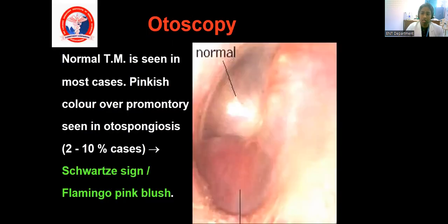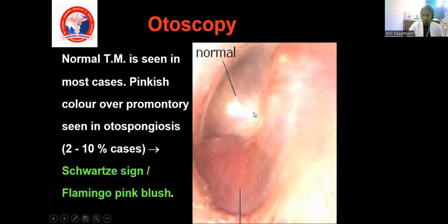On examination, in otosclerosis the external ear canal, tympanic membrane, and middle ear are usually normal. But in some cases of active otosclerosis where there is hypervascularity — especially when the lesion is over the cochlear type near the round window or promontory — the lesion will be hypervascular and it will be reflected into the tympanic membrane. We can see a pinkish blush over the tympanic membrane, called Schwartze sign or flamingo pink appearance. If a patient has this sign, surgery is not performed because it is the active type.